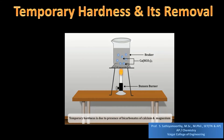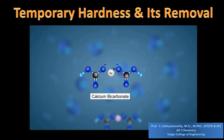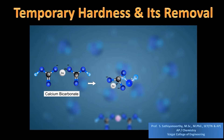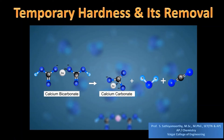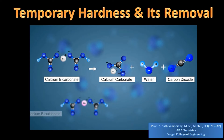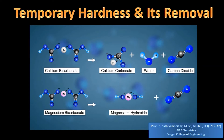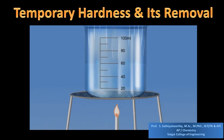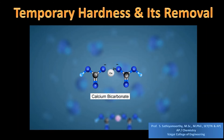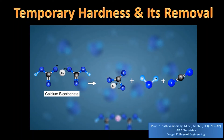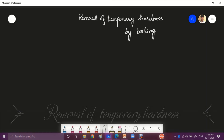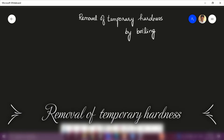Here you can see the equations involved. What happens to the temporary hardness-producing salts during boiling: calcium bicarbonate on boiling decomposes to calcium carbonate, water, and carbon dioxide. Similarly, magnesium bicarbonate decomposes into magnesium hydroxide and carbon dioxide. This is how the hardness-producing bicarbonate salts are removed.